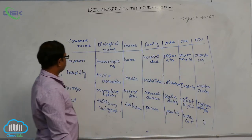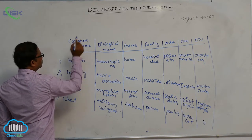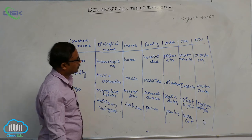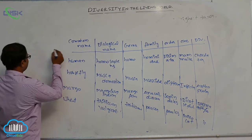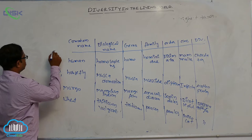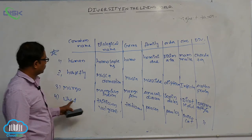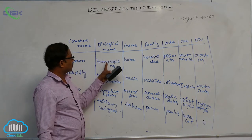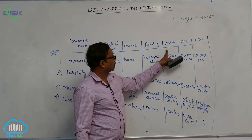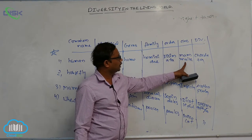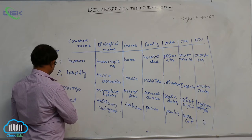So these are some columns about biological name, genus, family, order, class, and division — important for objective questions. Human: Homo sapiens, genus Homo, family Hominidae, order Primata, class Mammalia, division Chordata.